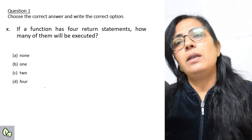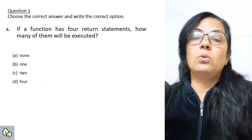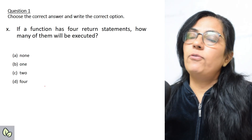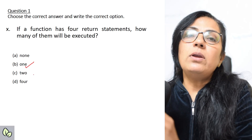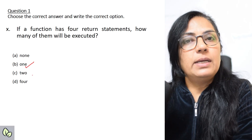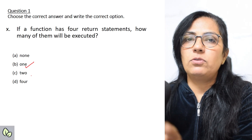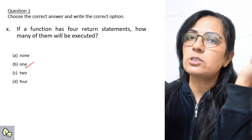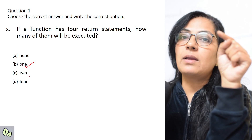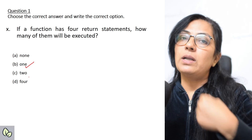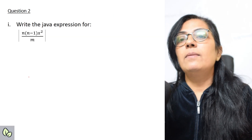If a function has four return statements, how many of them will be executed? The answer is always one. Irrespective of the number of return statements in a function, only one will ever be executed, because return transfers control back to the calling module and you cannot come back to execute the next statement in the function body.